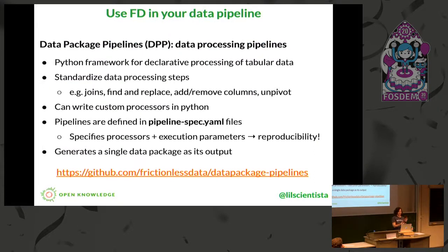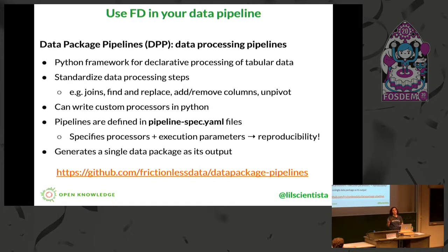The final piece of frictionless data software I'm going to tell you about is Data Package Pipelines, which is what we're using with this pilot collaboration. Data Package Pipelines is a data processing pipeline software — it's a Python framework for declarative processing of tabular data. It has standardized data processing steps already built into it, like joins and find-and-replace. In addition, you can write custom processors in Python for things your specific data needs. These pipelines are defined in a pipeline spec YAML file, which includes the specific processors that were done on your data and any execution parameters. Having this information written down really helps with reproducibility. DPP produces a single data package as its output.